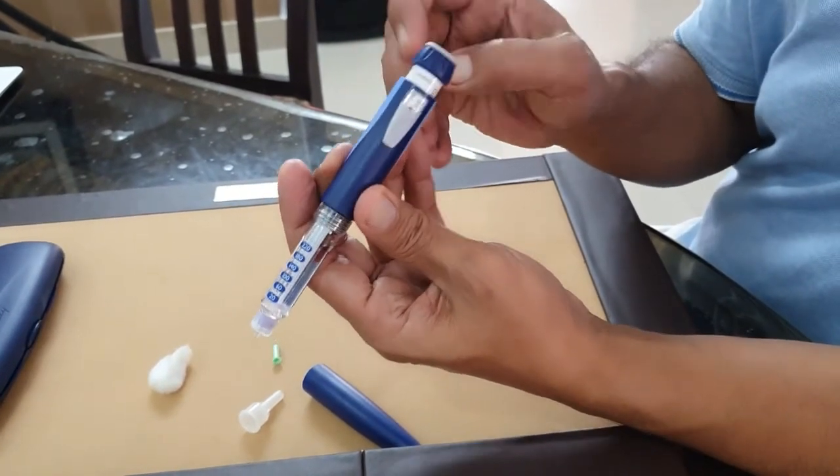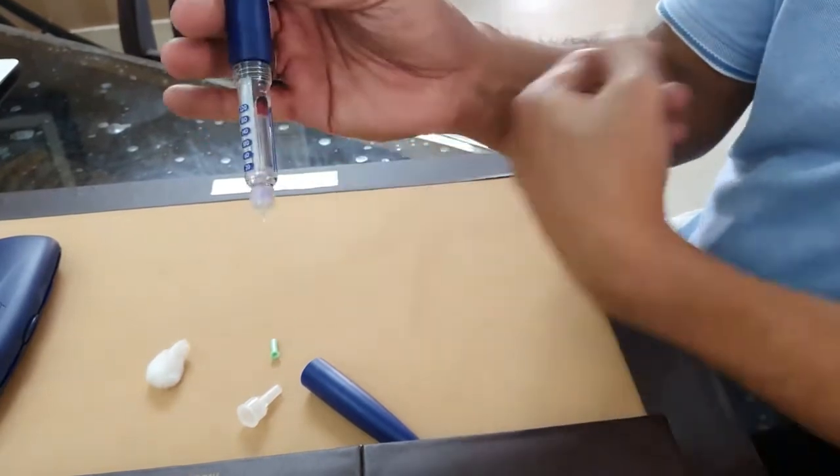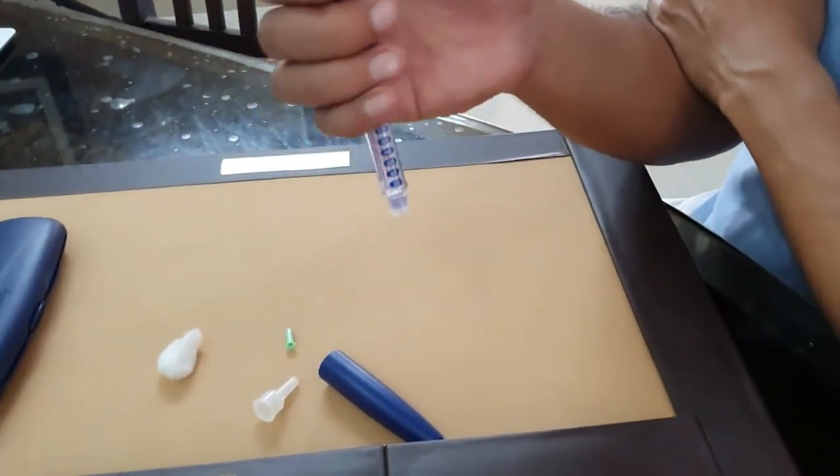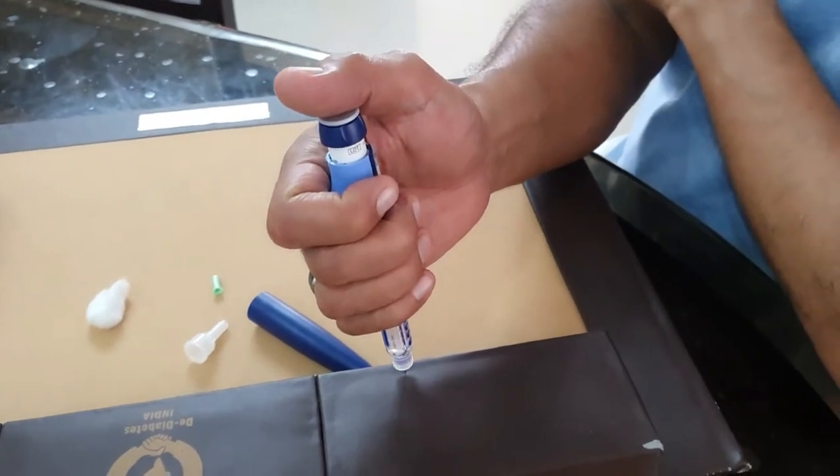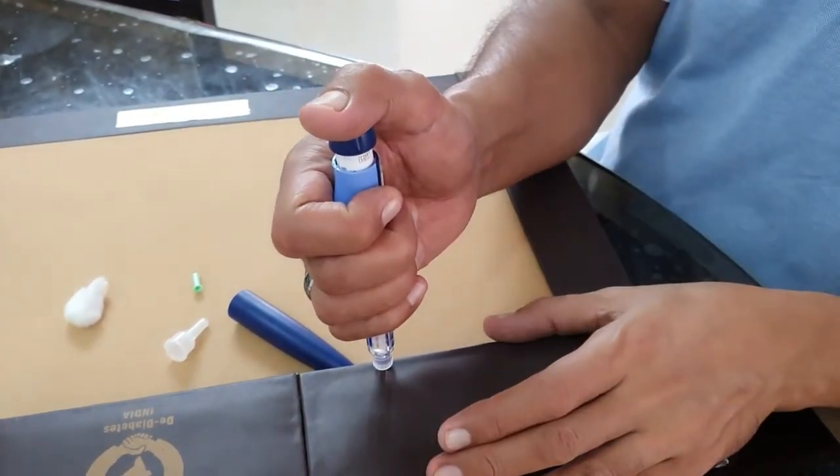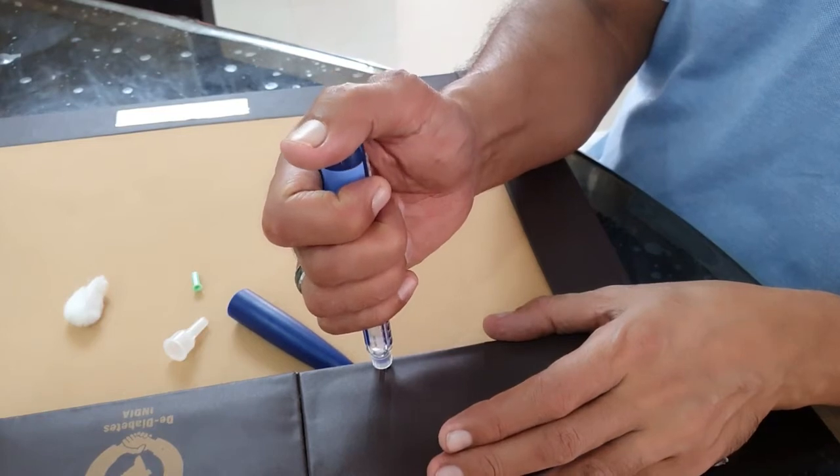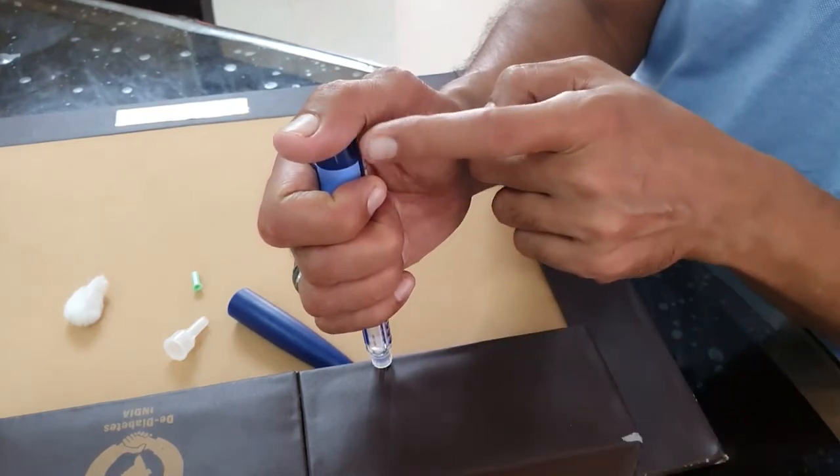Now you dial like this. If it is 15, you're going to keep it at the 15 mark. You're going to hold the pen like this and inject. When you inject, you're going to put it straight down on the body and inject like that.